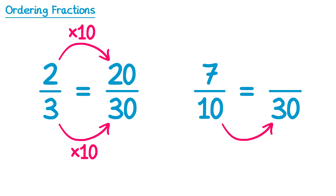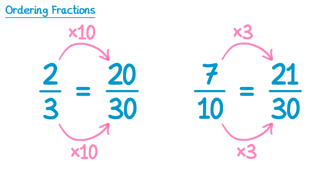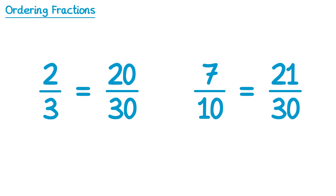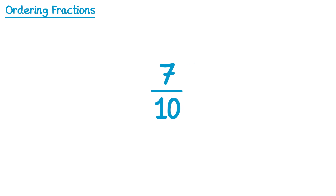For the second fraction, what do we multiply 10 by to get to 30? That's 3. So we multiply the 7 on the top by 3 as well, and 7 multiplied by 3 is 21. So 7 tenths is the same as 21 thirtieths. Now instead of comparing 2 thirds and 7 tenths, we can compare 20 thirtieths and 21 thirtieths. 21 thirtieths is bigger than 20 thirtieths, so the bigger fraction must have been 7 tenths.